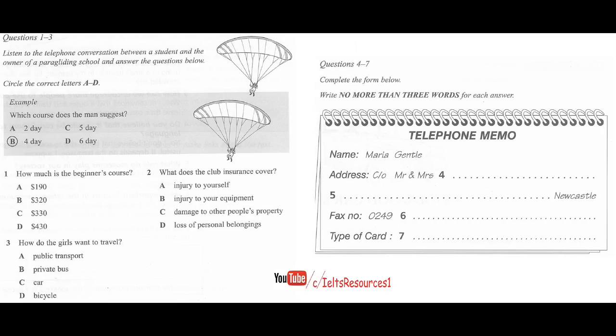What sort of prices are we looking at? The introductory is $190. The beginner's course, which is probably what you'd be looking at, is $320. No, sorry, $330. It's just gone up. And the pilot course is $430. Right. And you also have to become a member of our club so that you're insured. That'll cost you $12 a day.